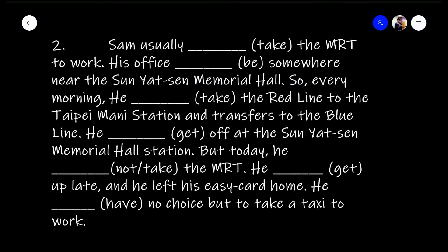Now this is the second part. Sam usually [takes] the MRT to work — find the time marker. It is here. Usually, when you see this, you know you have to use the present simple tense. We use the present simple tense to talk about either habits or facts, and this is a habit of Sam's. So Sam usually takes — why do we need this 'S'? Because the subject is Sam.